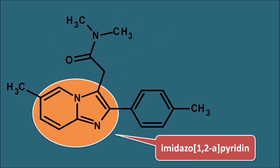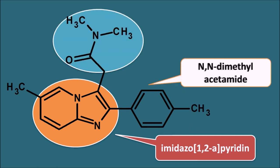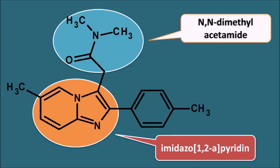This imidazolopyridine ring is attached with an N,N-dimethylacetamide side chain at the third position. So Zolpidem is an imidazolopyridine ring system with an N,N-dimethylacetamide side chain attached at the third position. We can find there is no structural relation between Zolpidem and the benzodiazepines, but still Zolpidem acts like the benzodiazepines.